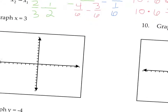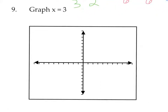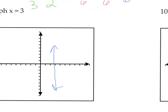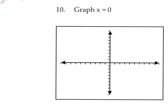Now let's practice horizontal and vertical lines. The equation x equals 3 means go to 3 on the x-axis and draw a vertical line through x equals 3 — this has a slope that's undefined. Similarly, x equals 0 is a vertical line right on the y-axis, and it also has a slope of undefined. Vertical lines always have undefined slope.